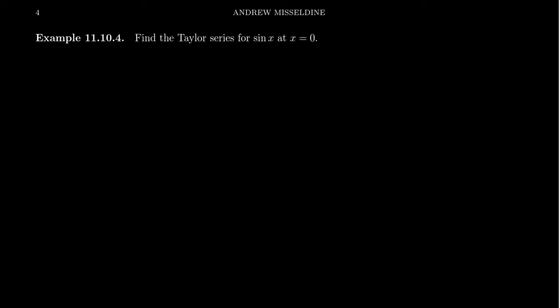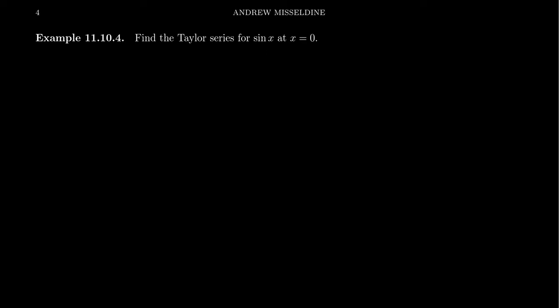We saw in the previous video in this series the Maclaurin series, and we saw a couple Taylor series for the function e to the x, the natural exponential. The natural exponential has the great fact that if you take the nth derivative of e to the x, you always end up with e to the x as well — its higher derivatives are predictable. Sine is actually a great alternative here. Let's take f of x this time to be sine of x, because sine of x also has some predictable derivatives.